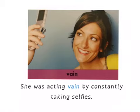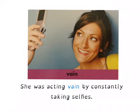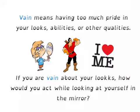The next word is vain. A sentence using vain: she was acting vain by constantly taking selfies. If you saw someone who just constantly was on their phone taking selfies of themselves, they would be vain. Vain means having too much pride in your looks, abilities, or other qualities. Vain is similar to prideful — you're having a lot of pride in your looks, abilities, and other qualities.